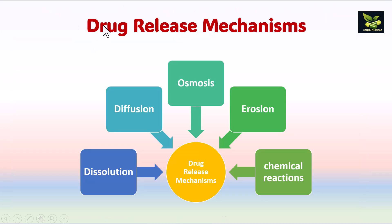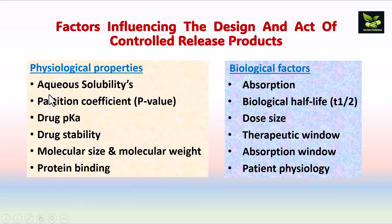Drug release mechanisms for controlled release systems include: dissolution, diffusion, osmosis, erosion, and chemical reactions. These are the main mechanisms by which these products function.